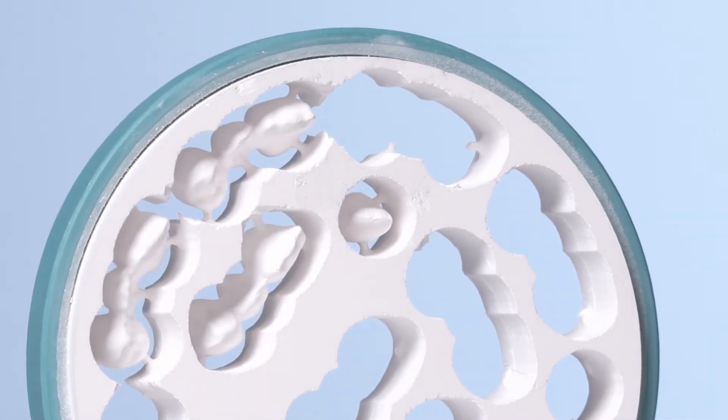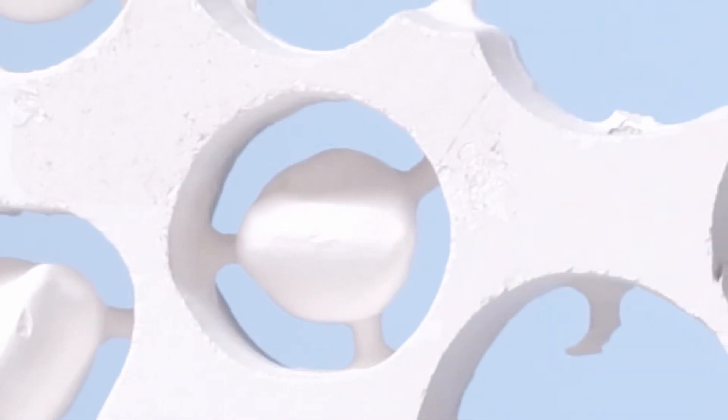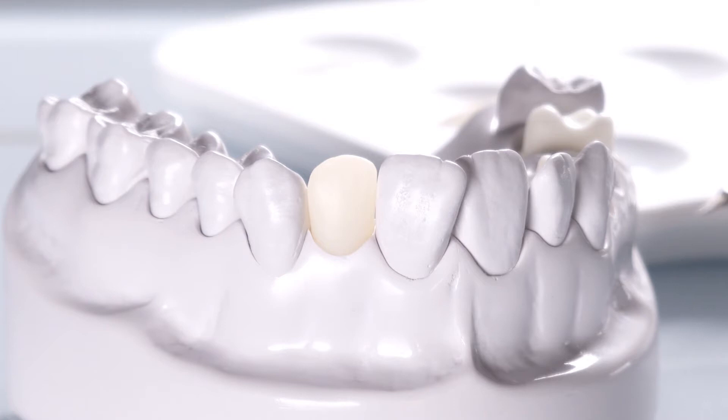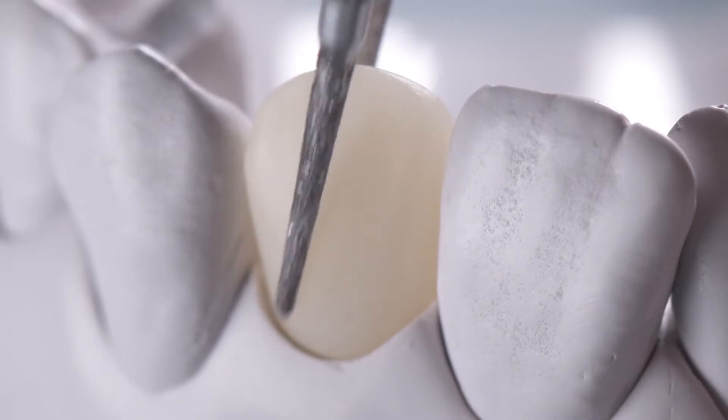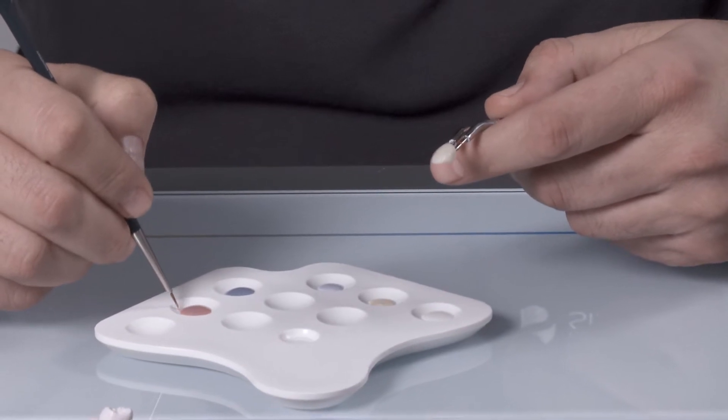The extra-translucent Sirkon XT Zirconia material provides a high level of aesthetics with monolithic restorations. All that is required is a final customization with universal stains and glaze.